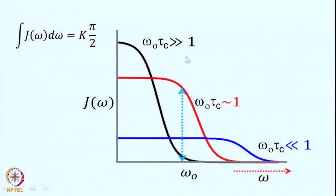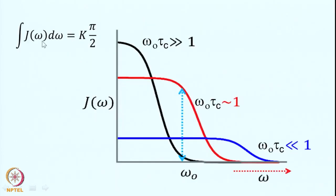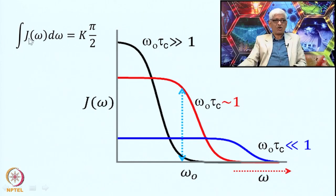Expanding I₁·I₂ explicitly gives terms Ix1·Ix2, Iy1·Iy2, and Iz1·Iz2. Using angular momentum operator algebra, certain terms are responsible for transitions while others contribute to diagonal elements. The relevant transition terms give non-zero results for Δm = 0, ±1, and ±2. This contrasts with RF-induced transitions where the selection rule was Δm = ±1. Here, both zero-quantum and double-quantum transitions are possible, implying that 0 and double quantum transitions will be caused by lattice fluctuations.